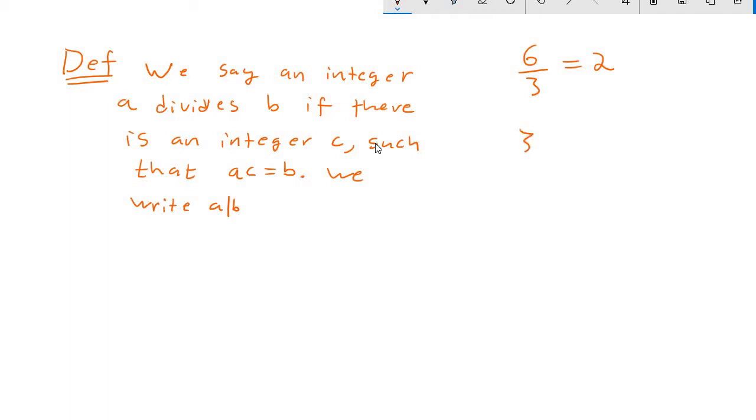As a check to make sure this makes sense with our original definition, I'm saying that 3 divides 6. By this definition, I need to find some integer c so that 3 times c equals 6. Sure enough, we already know 2 is what's going to do the job—3 times 2 equals 6. So this is just formalizing our intuitive definition of what it means for one integer to divide another.